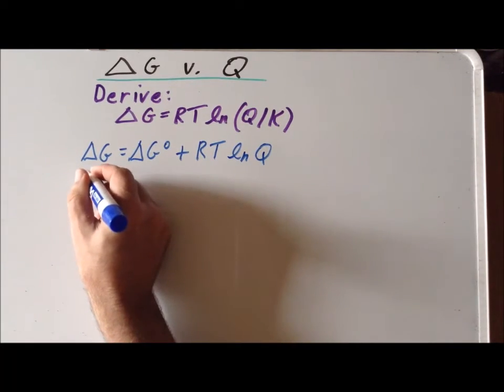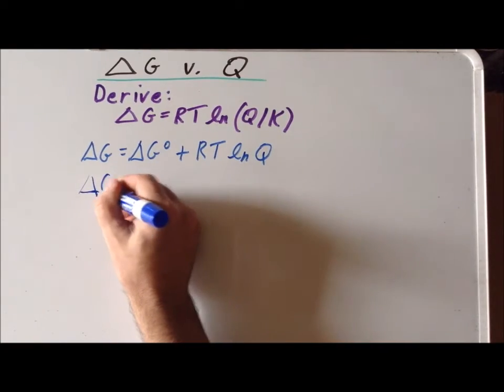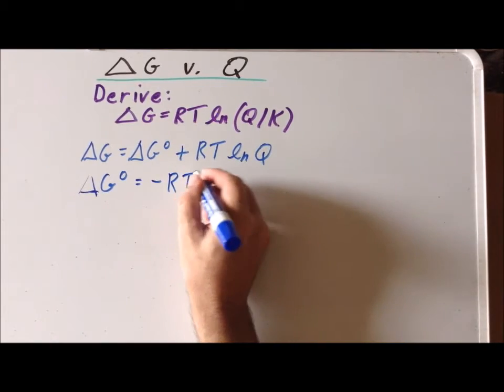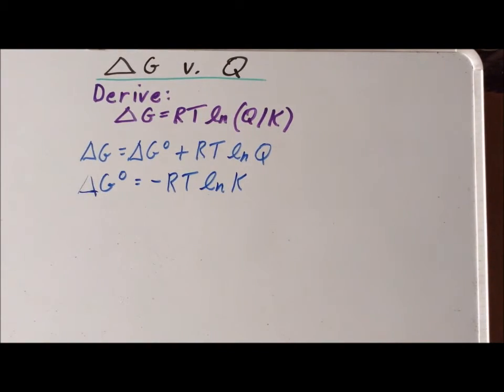And also, our important relationship for delta G naught is equal to minus RT times the natural log of K, the equilibrium constant.